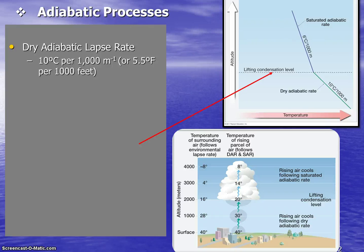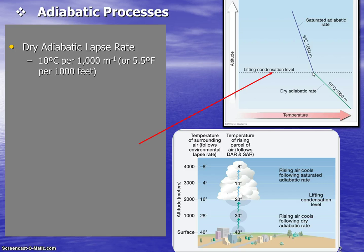For our purposes we're going to stick with Celsius and meters in the metric system. So imagine that you were at sea level and the temperature was 30 degrees Celsius. As the air rises 1000 meters, the temperature will cool by 10 degrees Celsius, giving us a new temperature of 20 degrees Celsius.